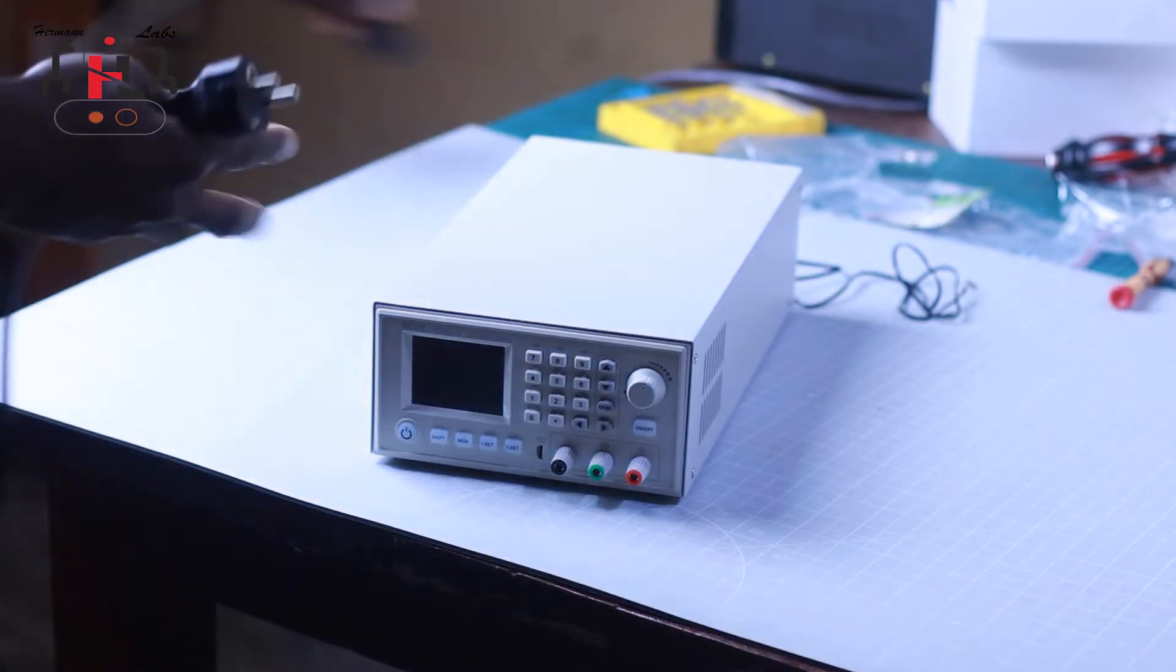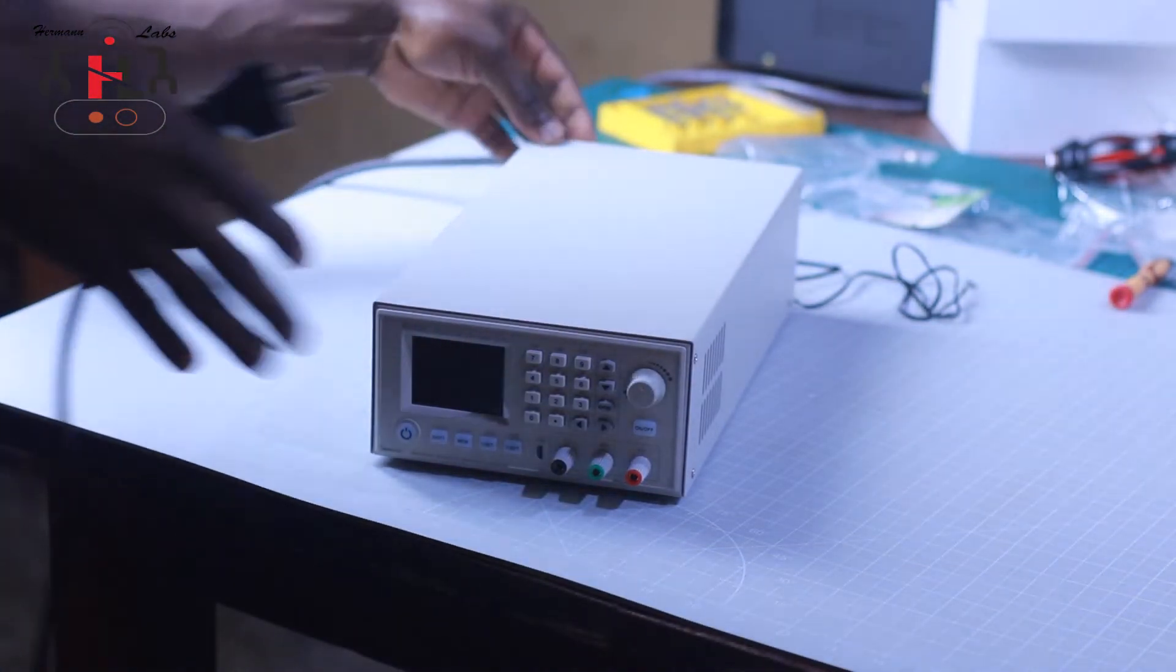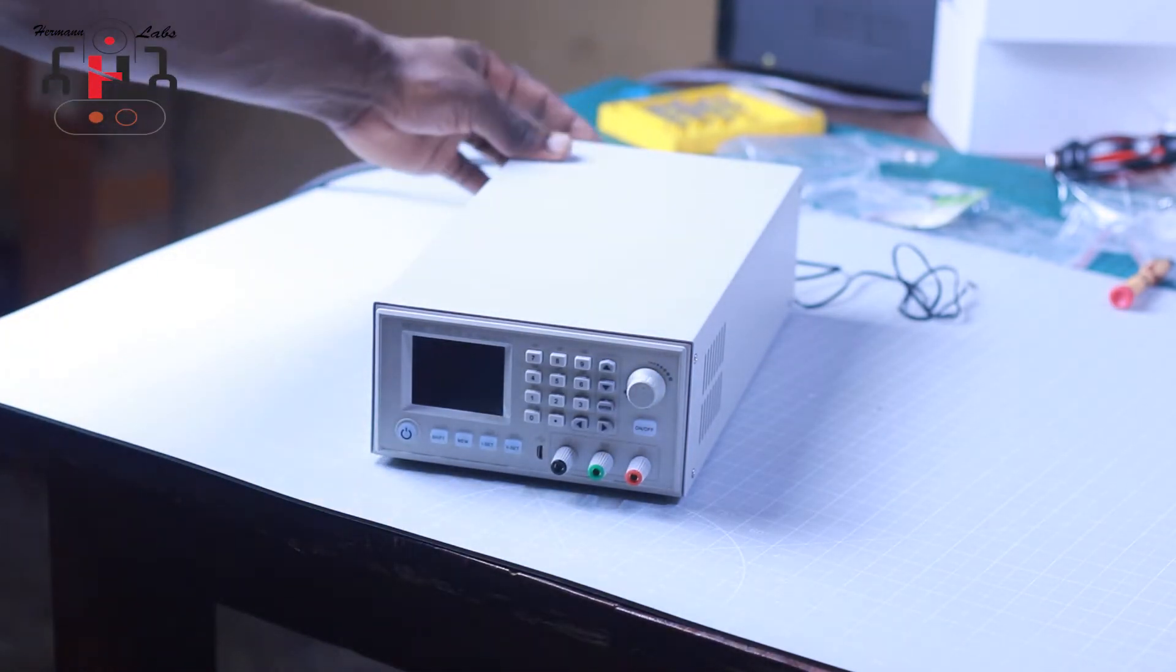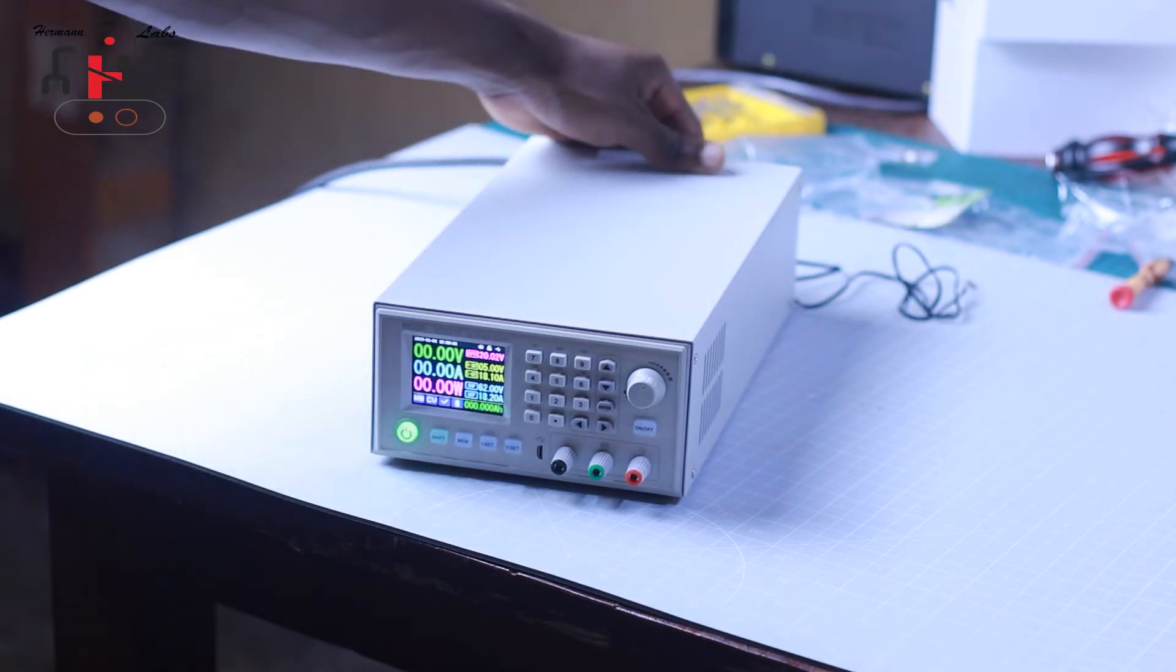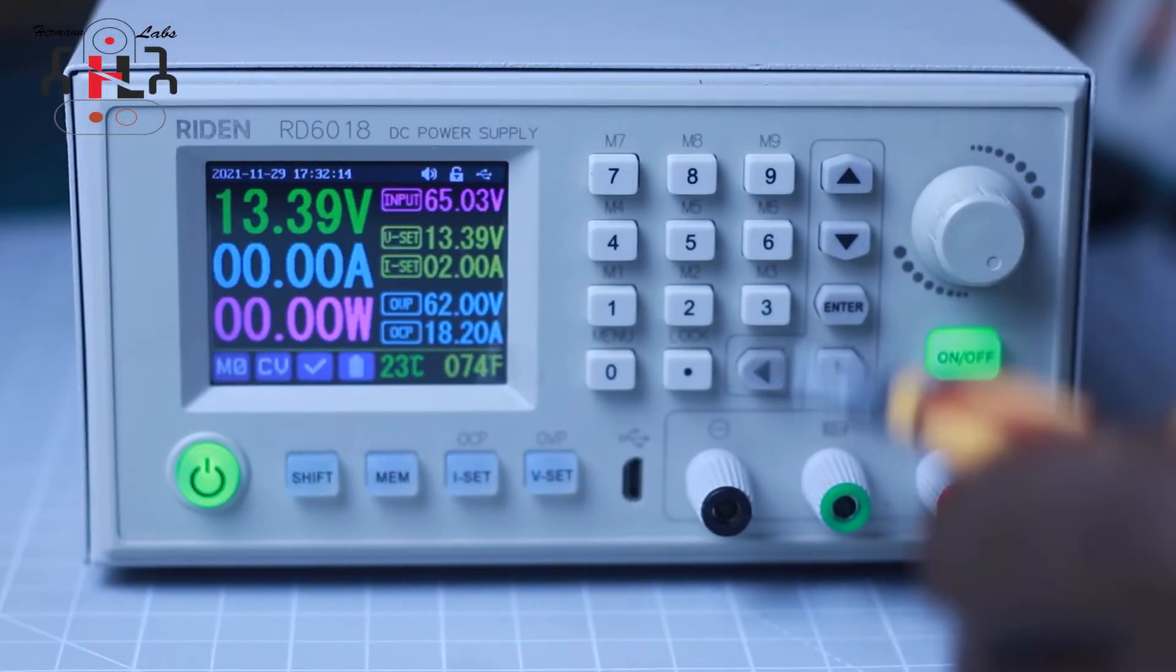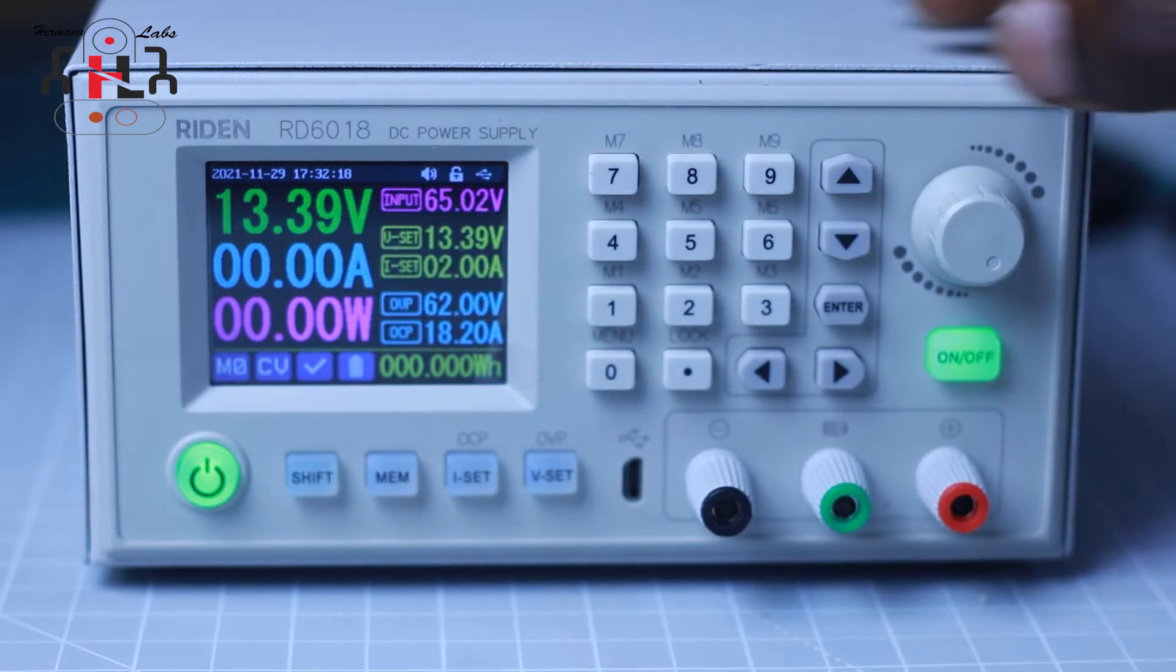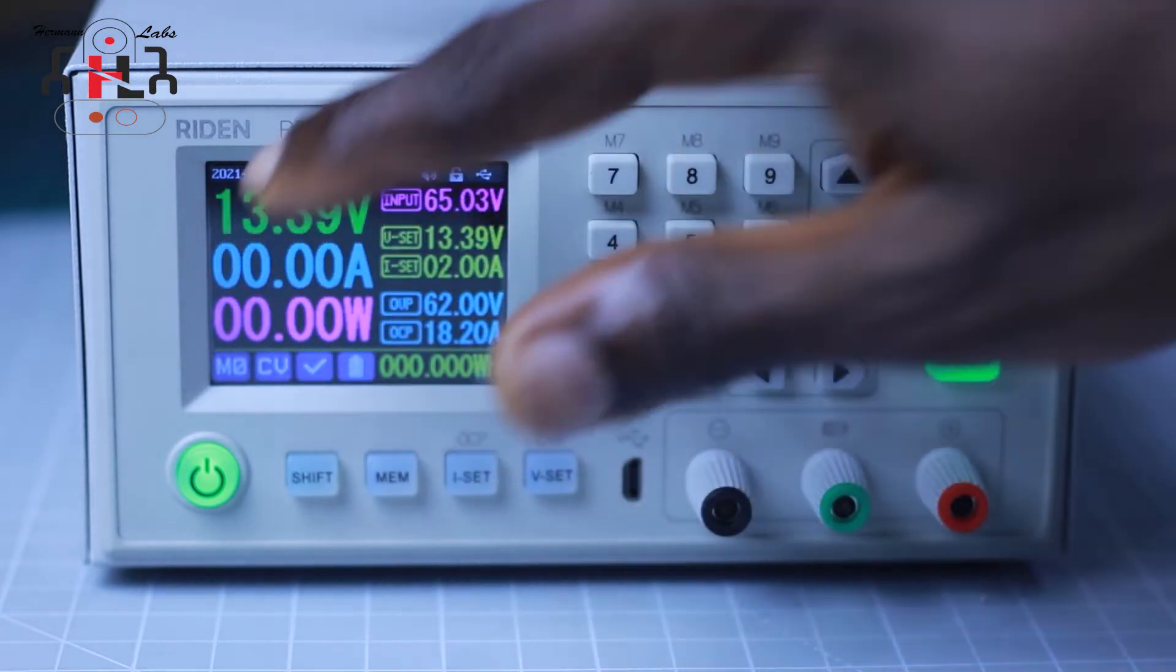Now that we have this unit assembled, let's power it on and explore some of the features that it has to offer. This power supply has a panel full of buttons, connectors, a 2.4 inch OLED display and a rotary encoder.